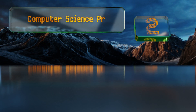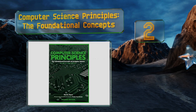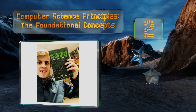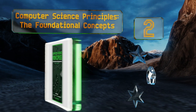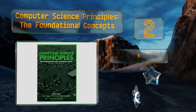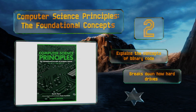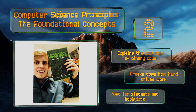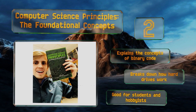At number two, Computer Science Principles: The Foundational Concepts takes what many consider to be a complicated subject and presents it in a logical, straightforward, and easy-to-comprehend format. It covers a broad range of topics, from coding JavaScript to what an IP address is. It explains the concepts of binary code and breaks down how hard drives work.